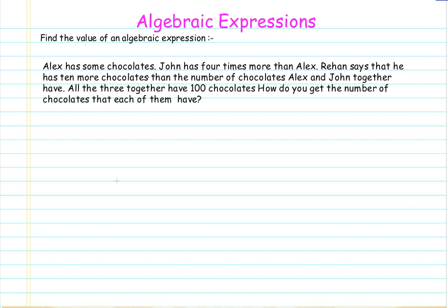We will take one example of three friends: Alex, John, and Rehan. They all have some number of chocolates with a relation. Alex has some chocolates, but we are not aware how many. We will denote the number of chocolates Alex has with the variable x, where x can take any numerical value.